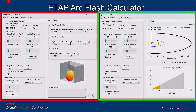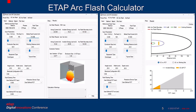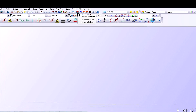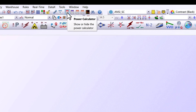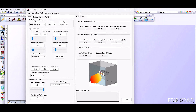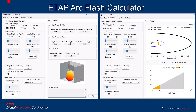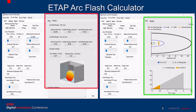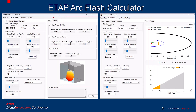This is the ETAP ArcFlash Calculator. I am currently using ETAP version 22.0.2. The icon is located here — it is actually called the Power and ArcFlash Calculator. When you hover over the icon, it says Power Calculator, not ArcFlash — a little tricky; I think ETAP should update that. Both images shown are ArcFlash Calculators. The difference is the view on the right area: the left image shows the result interface, and the right image shows the plot.